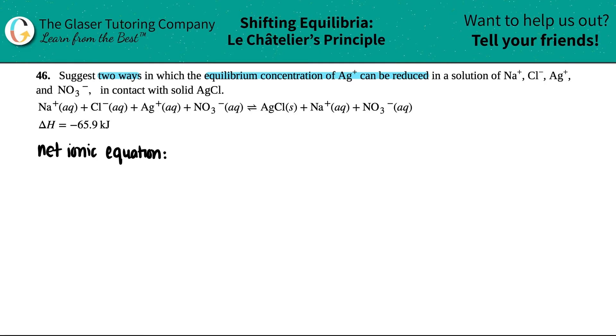Remember, the net ionic equation from the total ionic is just get rid of your spectator ions. I see on both sides that I have an Na plus aqueous and an Na plus aqueous. I also see that I have an NO3 minus and an NO3 minus. So goodbye to you and goodbye to you.